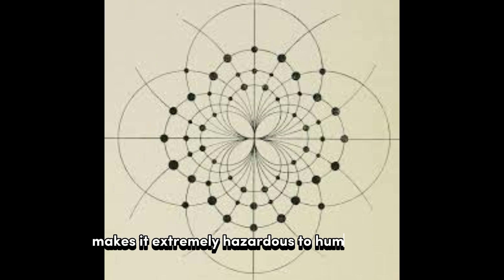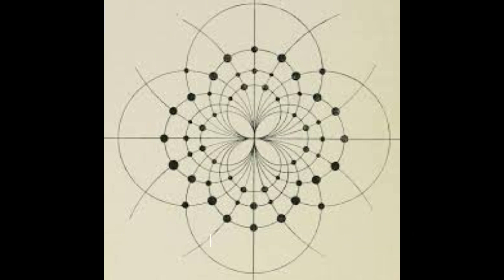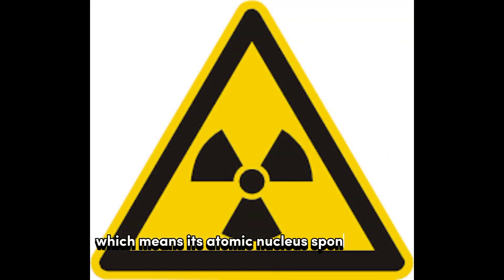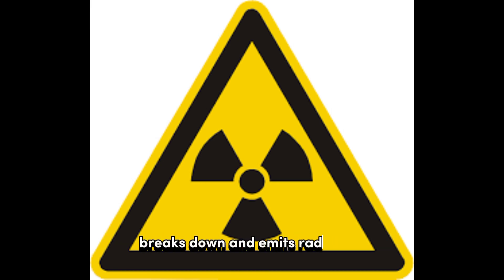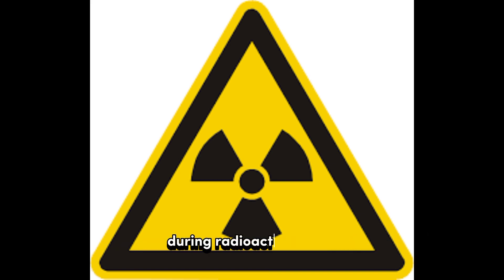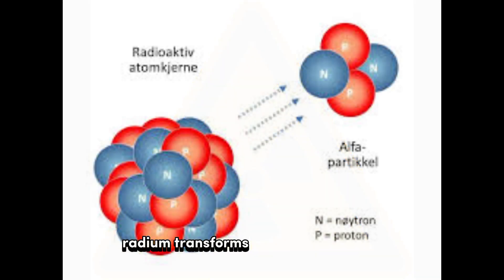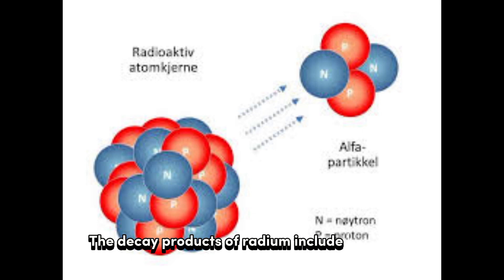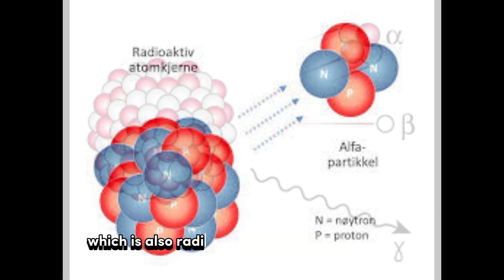Radium undergoes radioactive decay, which means its atomic nucleus spontaneously breaks down and emits radiation. This process continues until it reaches a stable state. During radioactive decay, radium transforms into other elements in a series called the radioactive decay chain.